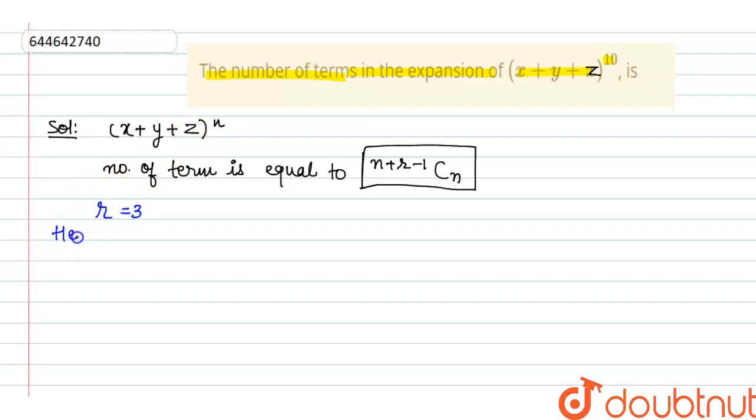Hence, we can say number of terms are n in place of r, 3 minus 1 C n. So, it can be written as n plus 2 C 2.